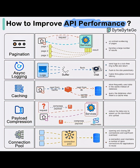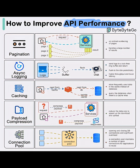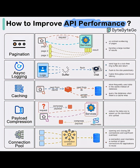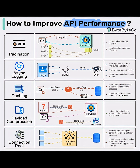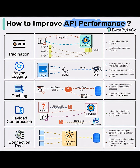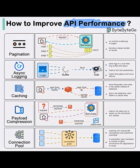5. Connection Pool. Instead of opening and closing DB connections repeatedly, the API uses a pool of reusable connections. This saves time and resources, reduces overhead, and boosts throughput and scalability.